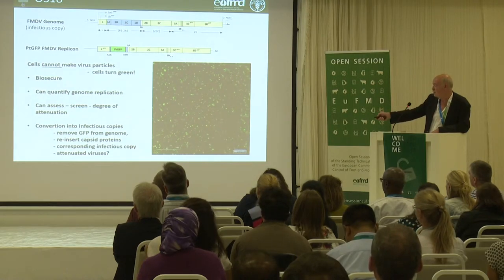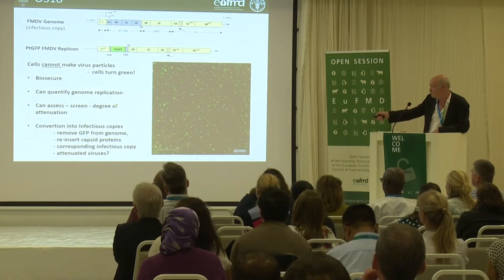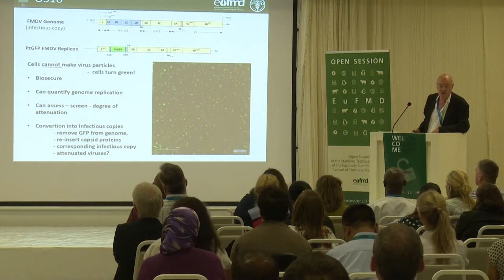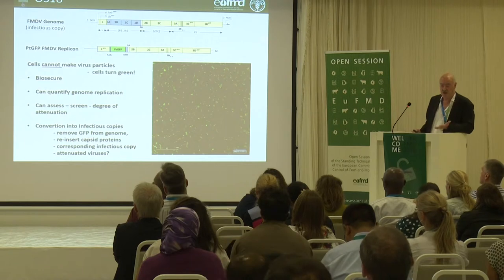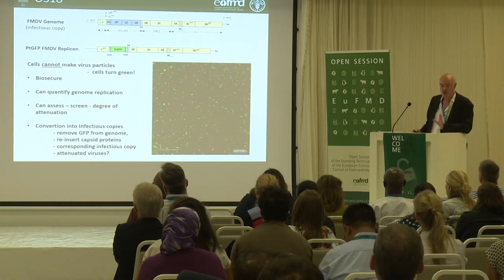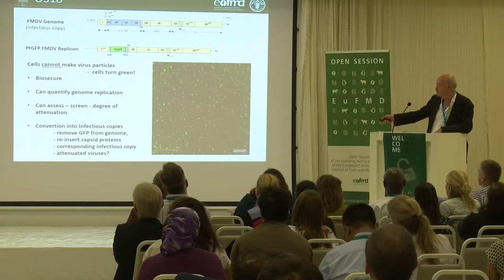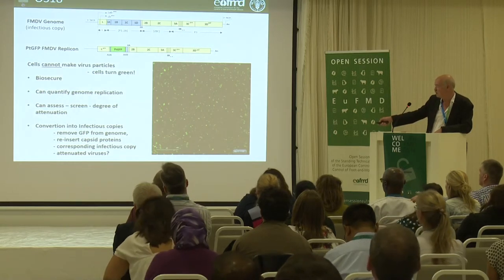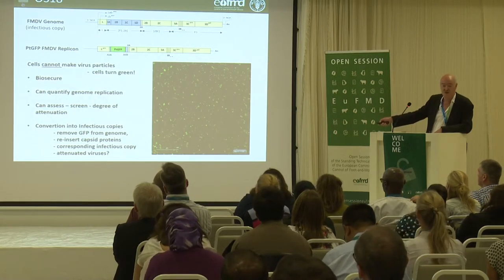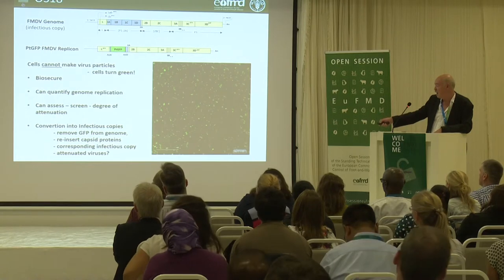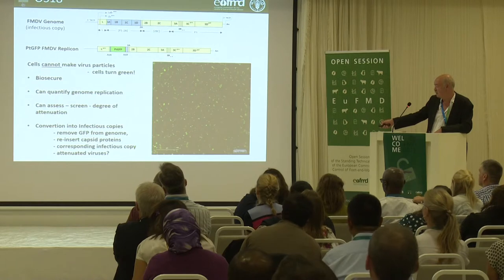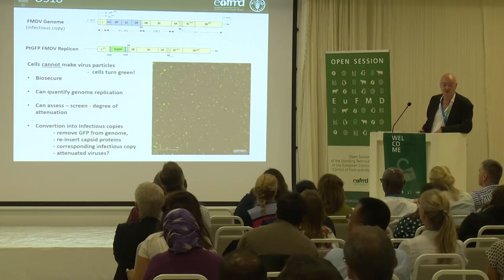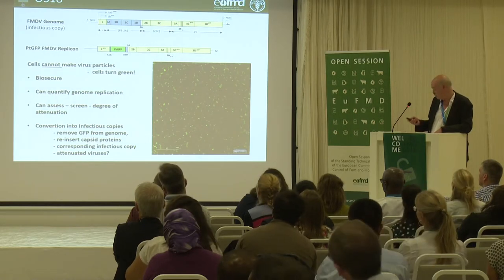So it's biosecure. We can quantify genome replication and screen the degree of attenuation for candidate mutations. And then, as I said, we have to interact with Perbright — the only place that can actually rescue virus. We can transport these replicons to Perbright where they're converted into infectious copies by removing GFP, reinserting the capsid proteins, making the infectious copy and then looking at the phenotypes of these attenuated viruses.